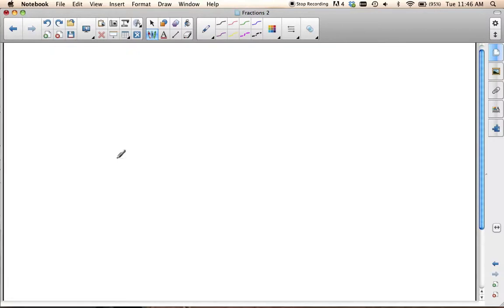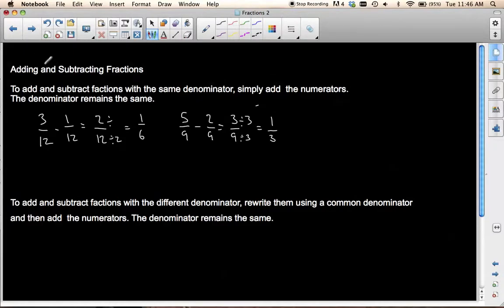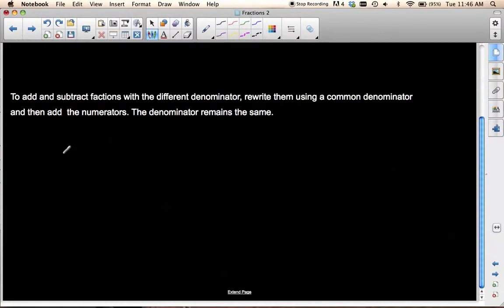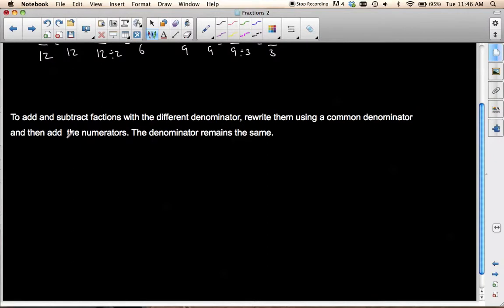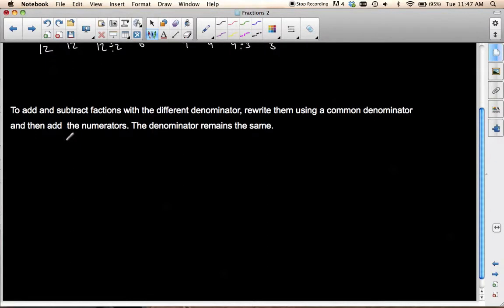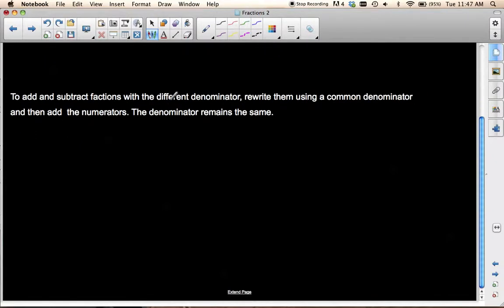Now, if they're different denominators, the rule for that is to add and subtract fractions with different denominators, you rewrite them using a common denominator and then add the numerators. The denominator remains the same. So if we have 1 over 3 plus 1 over 4, I need to find a common denominator of 3 and 4.